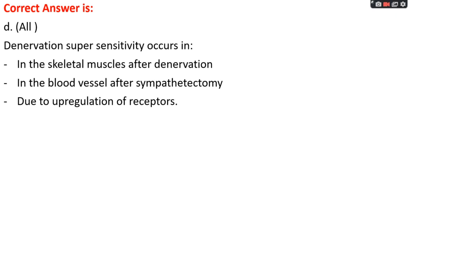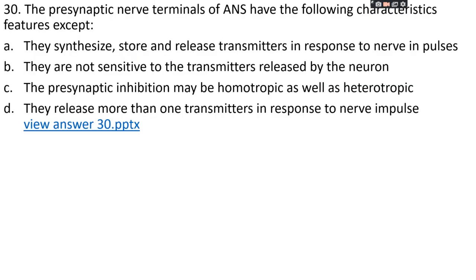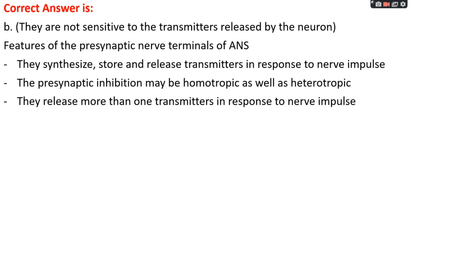Question number thirty: the presynaptic nerve terminals of the autonomic nervous system have the following characteristic features EXCEPT — option A: they synthesize, store, and release transmitters in response to nerve impulse; option B: they are not sensitive to the transmitter released by the neuron; option C: presynaptic inhibition may be homotropic as well as heterotropic; or option D: they release more than one transmitter in response to nerve impulse. The right answer is option B. The presynaptic nerve terminals do synthesize, store, and release transmitters, may show homotropic and heterotropic inhibition, and release more than one transmitter.